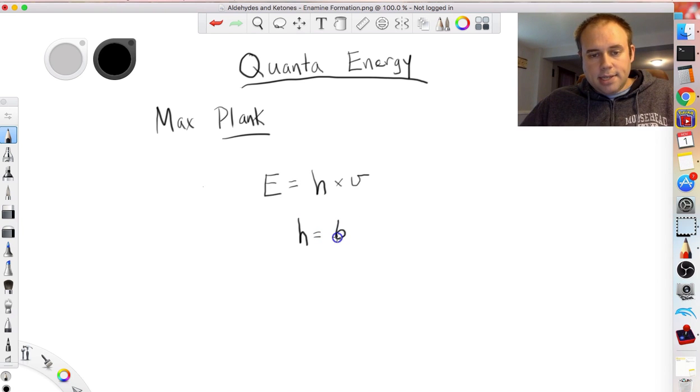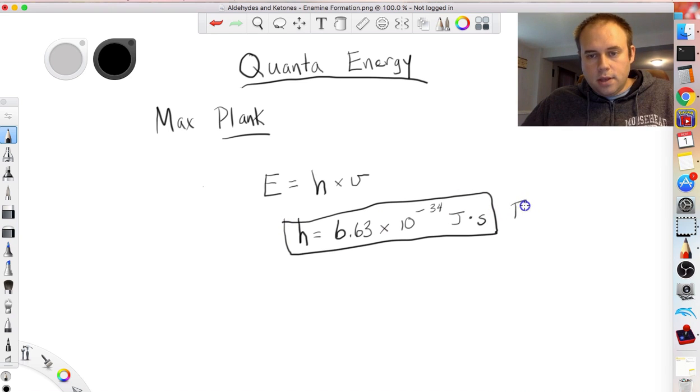So it turns out that Planck's constant is 6.63, and we're approximating here, times 10 to the negative 34th joule second. That is Planck's constant right there. Very important value, you want to make sure that you have this memorized if you're doing tests or anything like that because it is going to come up over and over again.